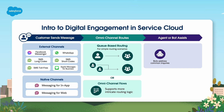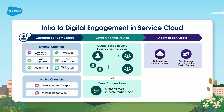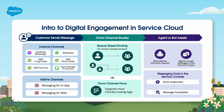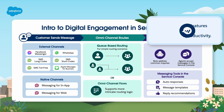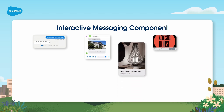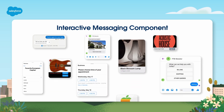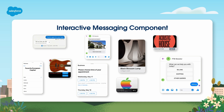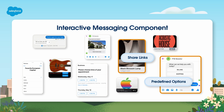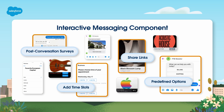No matter what message channel or how messages are routed to them, assigned agents can accept and handle cases using the Omni-Channel widget in the Service Console. There are lots of tools to make handling digital engagement in the Service Cloud console more efficient. You can set up internal features such as auto-responses, message templates, and reply recommendations to help boost agent productivity. With native messaging and some external services you also have the option to use interactive messaging components — common use cases include sharing links, creating questions with predefined options, adding time slots, and surfacing post-conversation surveys.